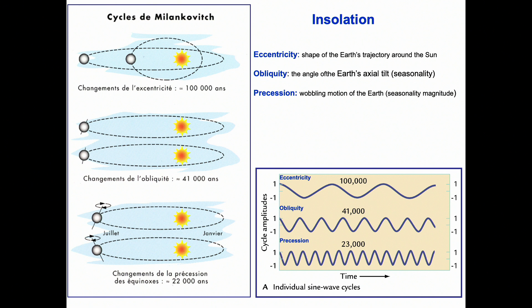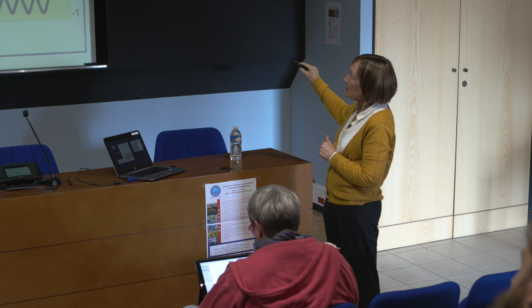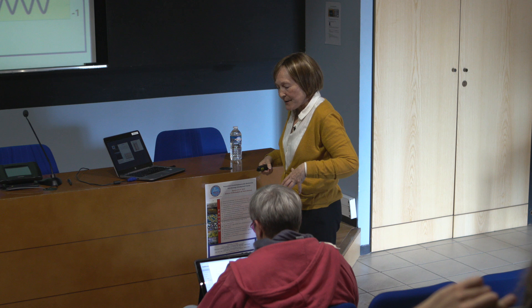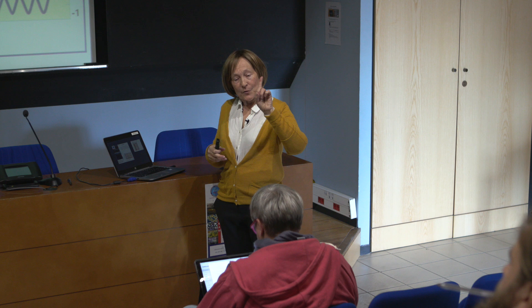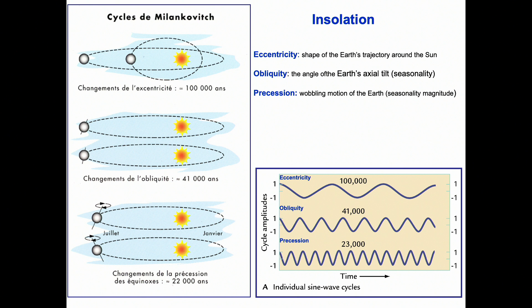The changes in the angle of the Earth's axis occur with a cyclicity of 41,000 years. The third parameter is precession — the wobbling motion of the Earth. Because the Earth is not completely round but is quite thick at the equator, the Earth's axis changes direction. Sometimes the Earth's axis points toward the Sun in summer and away from the Sun in winter, indicating high seasonality. Conversely, when the axis points toward the Sun in winter, you have relatively warm winters and relatively cold summers, indicating low seasonality.